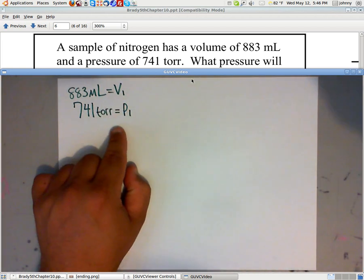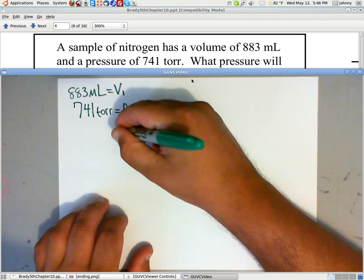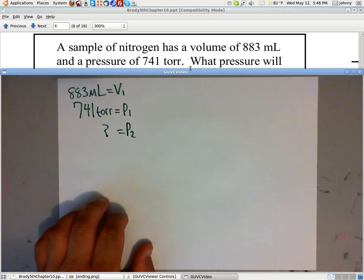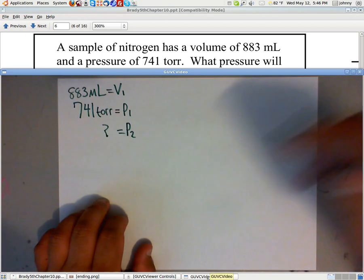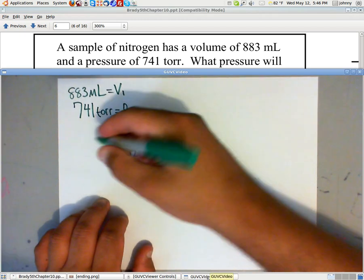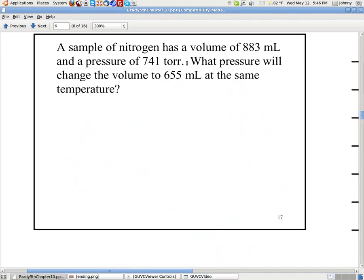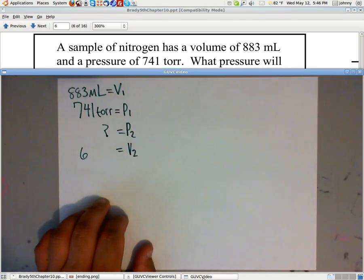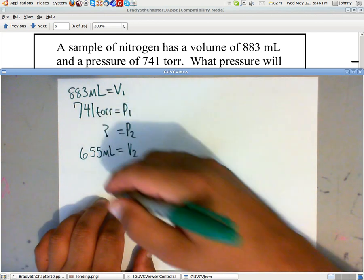Now, notice that as we keep reading, they mention what pressure. So this is the second time they've mentioned pressure, so we know this is the second pressure. Except this one's unknown. And as you read on, it says what pressure will change the volume to 655 milliliters. Now, that's our second volume. So we write down 655 milliliters and fill that in.